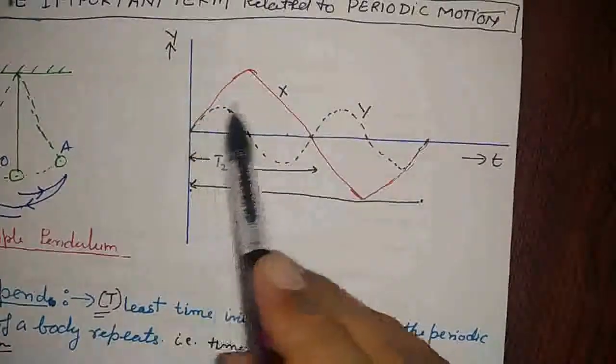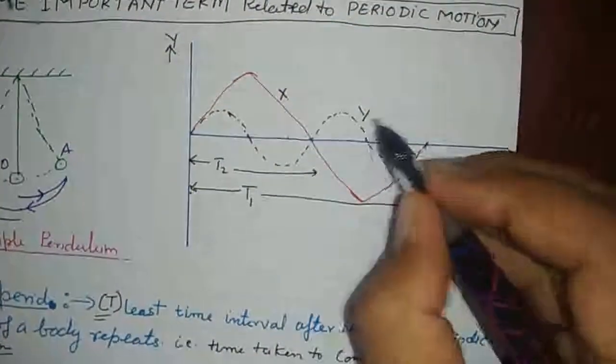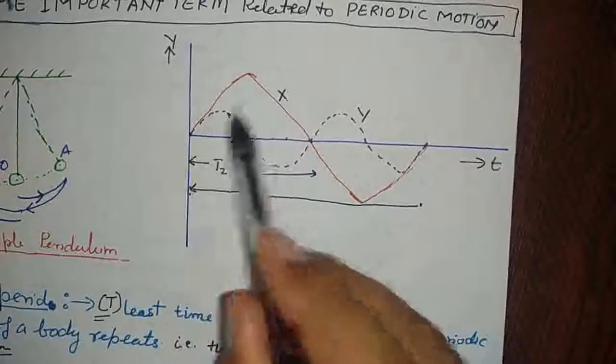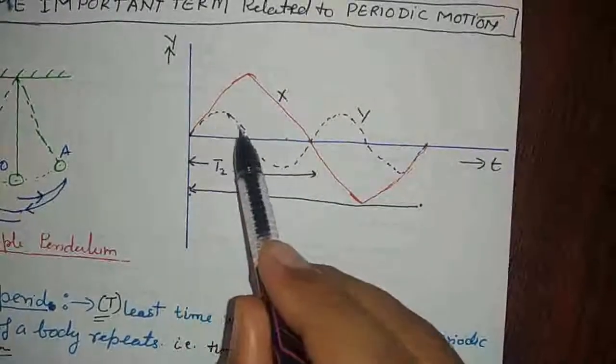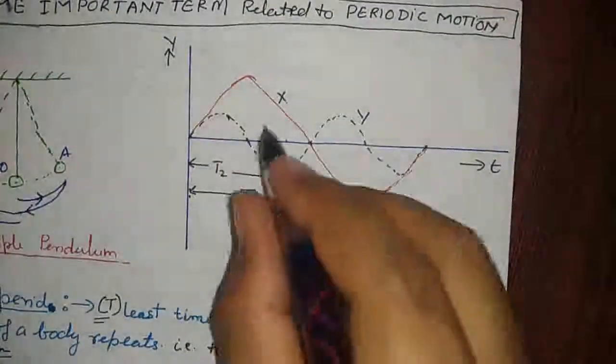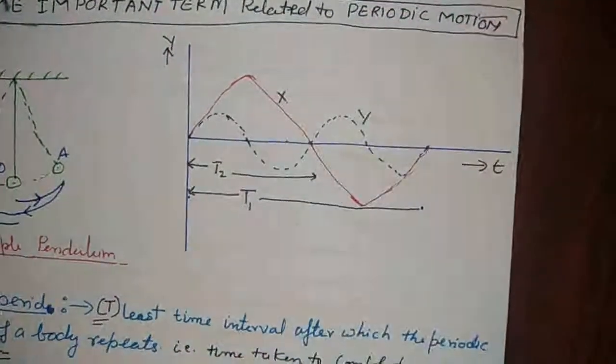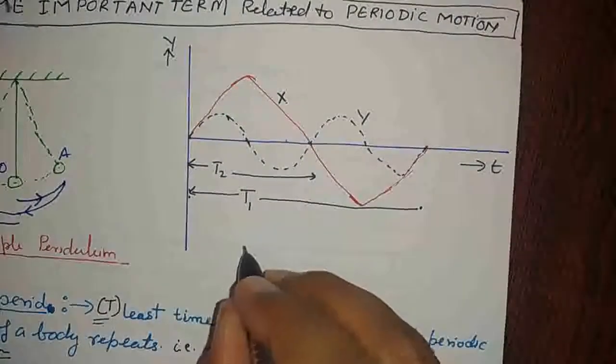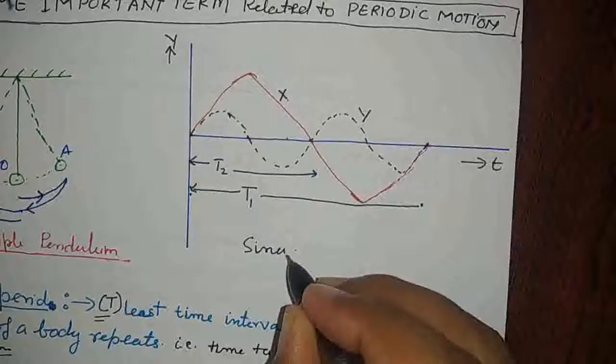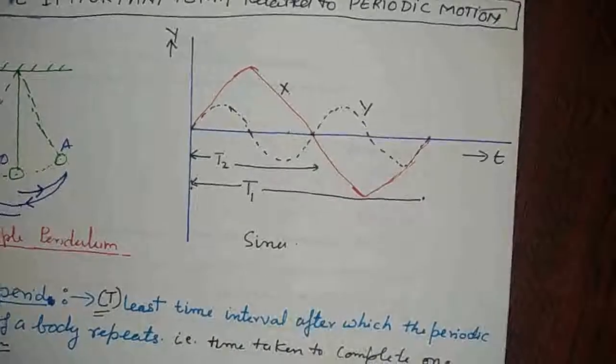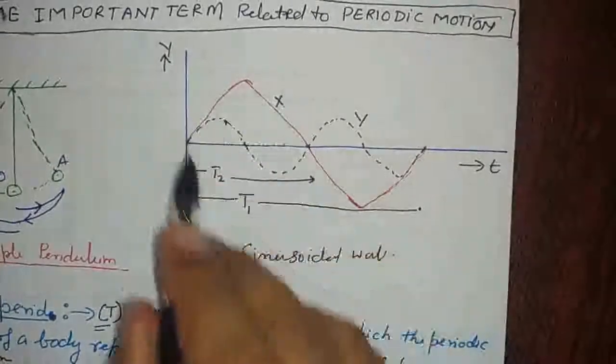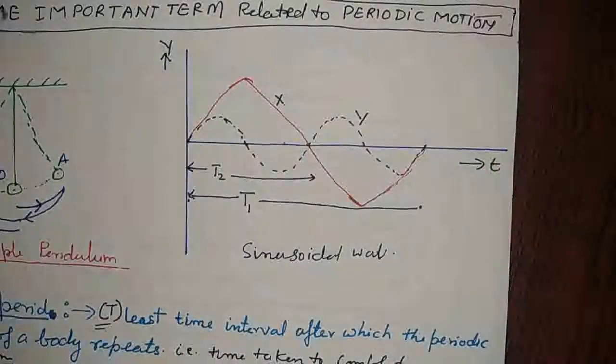Two sine waves are here given, X and Y. X is represented by red color and Y wave is black in color with dotted line. If more than one sine wave is in the displacement time graph, then it is called sinusoidal wave, which is represented here.